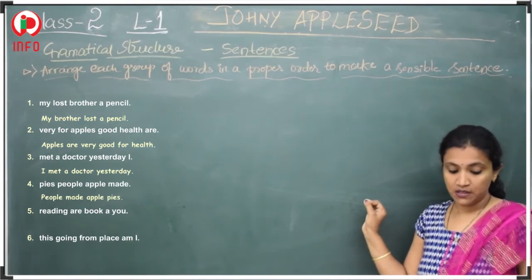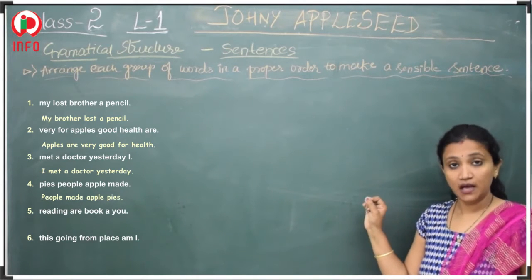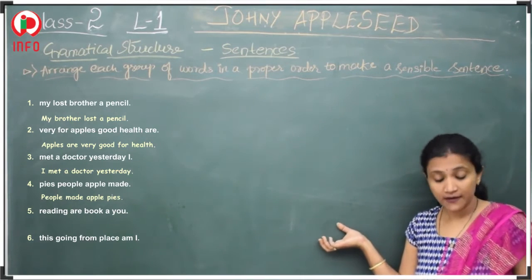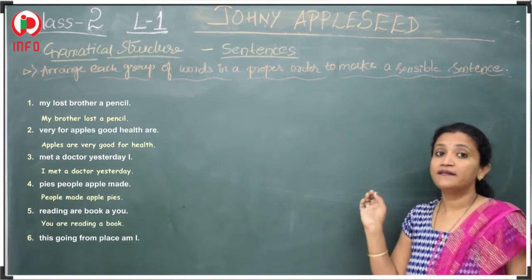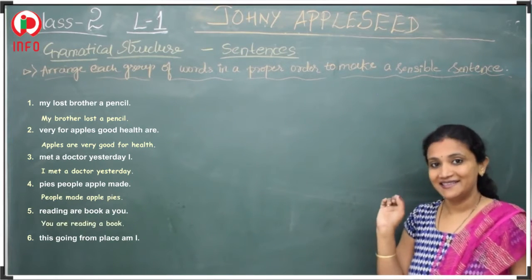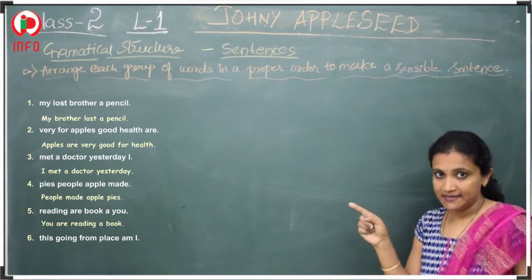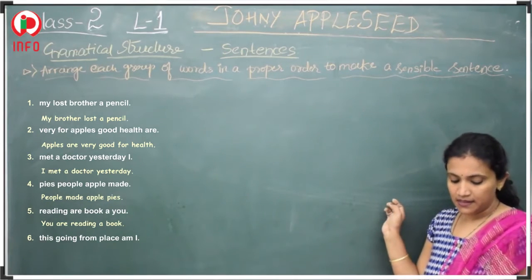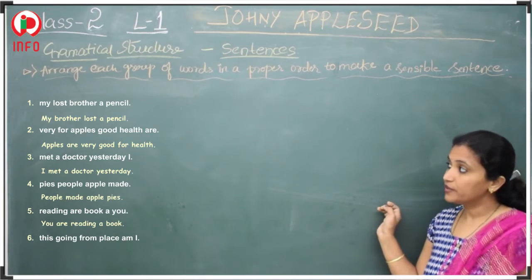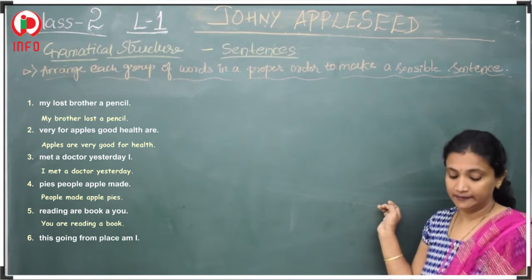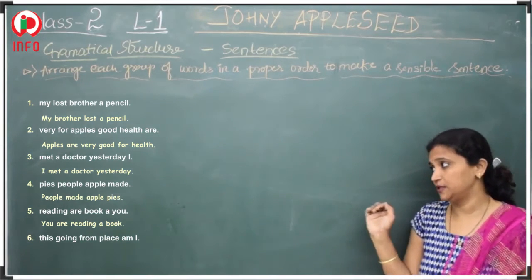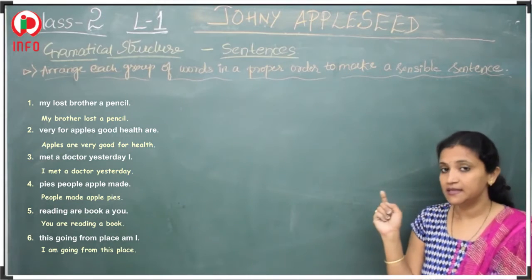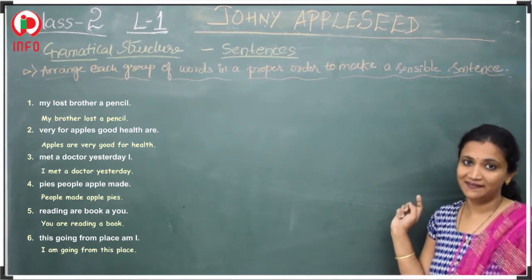Next: 'Reading our books are you.' This is not a correct sentence. The correct and meaningful sentence is: 'You are reading a book.' Y in 'You' is capital and after 'book' there is a full stop. Then: 'This going from place am I.' The correct sentence is: 'I am going from this place.' I should be capital and after 'place' a full stop should be there. We have now finished this exercise.